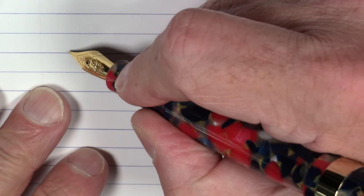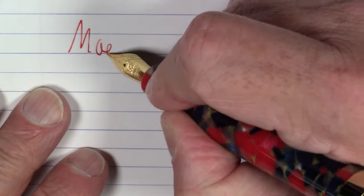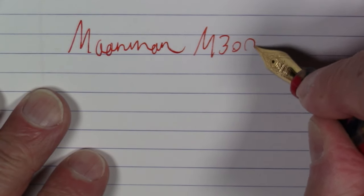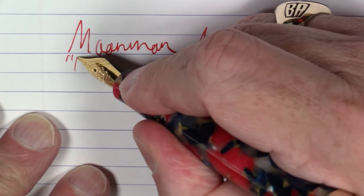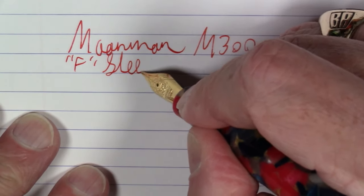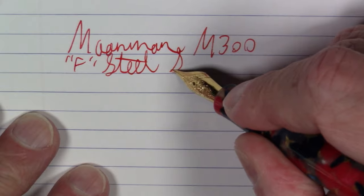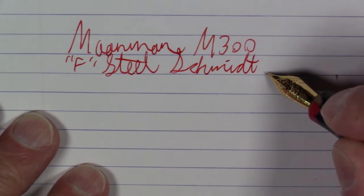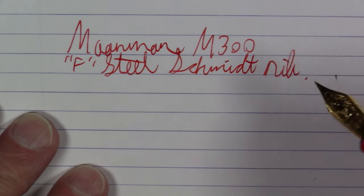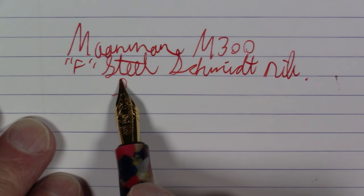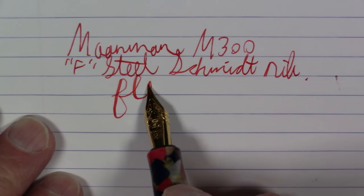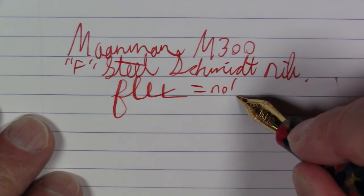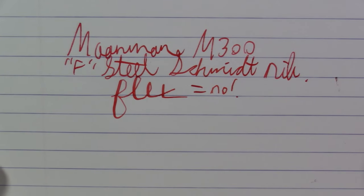Okay, folks, what we're writing with here is a Moonman model M300. And this has a fine steel Schmidt nib. In terms of flex, no. You could just ooze out a tiny bit of line variation, but this is not a flexy nib by any means. In fact, it's actually classified as quite stiff.